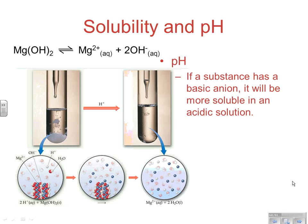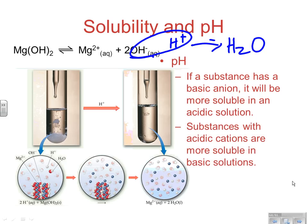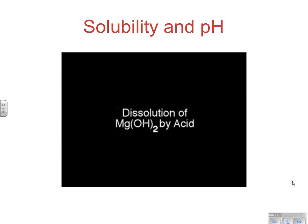Solubility and pH: if magnesium hydroxide dissolves, one of the products is the hydroxide ion. Adding hydroxide is adding a common ion, which shifts equilibrium to the left, lowering solubility. Adding an acid reacts with hydroxide to make water, effectively lowering the hydroxide concentration and increasing the solubility of magnesium hydroxide. If a substance has a basic anion, it will be more soluble in an acidic solution. Conversely, substances with acidic cations are more soluble in basic solutions.